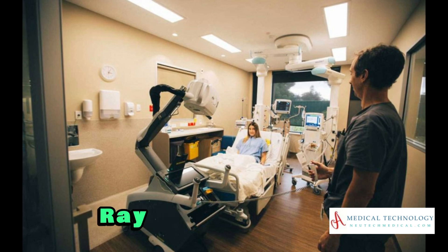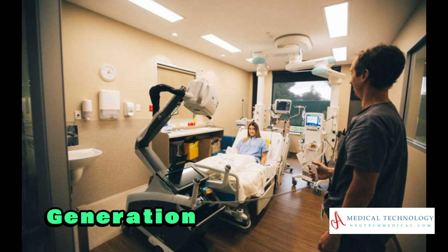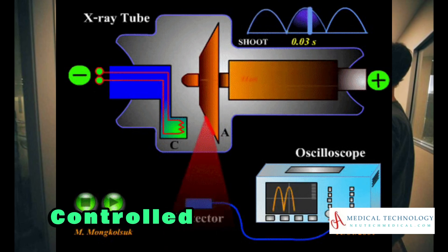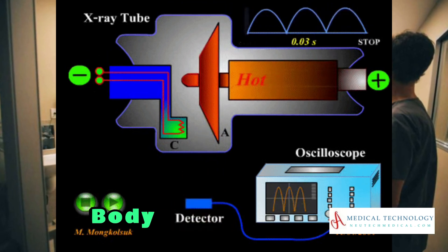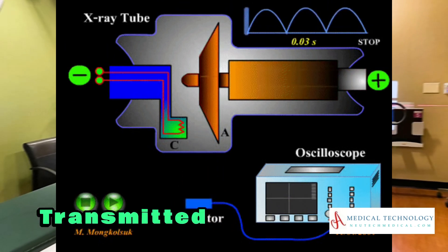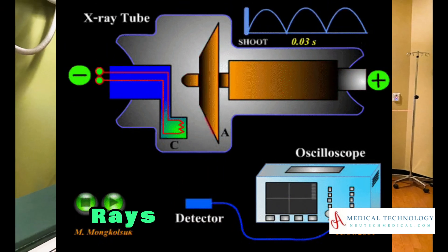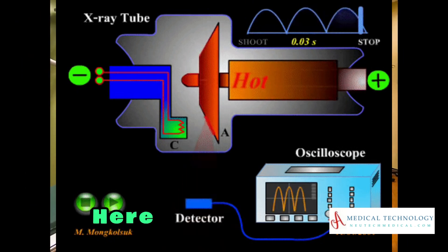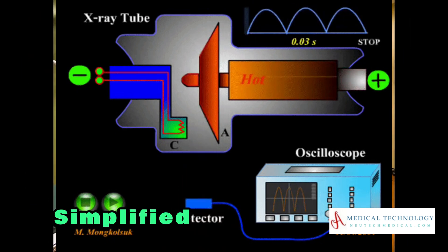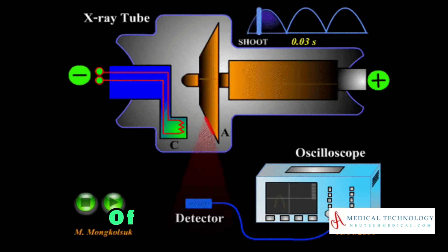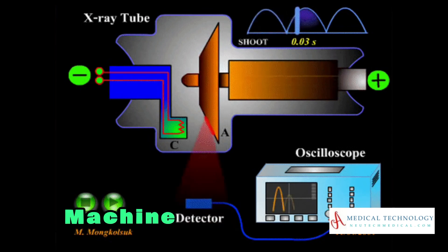The working principle of an X-ray machine involves the generation of X-rays, their controlled exposure to the patient's body, and the detection of the transmitted X-rays to create diagnostic images. Here is a simplified explanation of the key steps in the working of an X-ray machine.